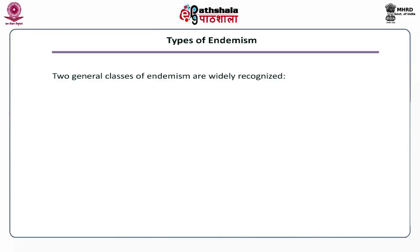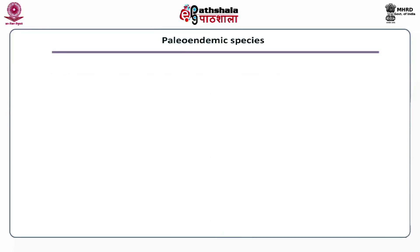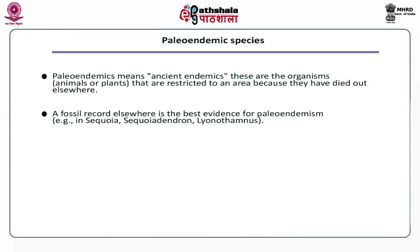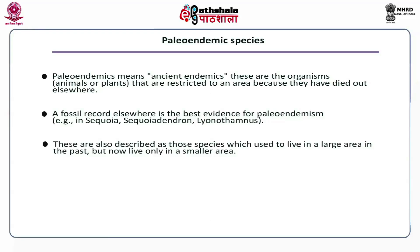Two general classes of endemism are widely recognized: paleoendemism and neoendemism. Paleoendemics means ancient endemics — these are organisms, animals as well as plants, that are restricted to an area because they have died out elsewhere. A fossil record elsewhere is the best evidence for paleoendemism. Examples include Sequoia and Sequoiadendron. They are also described as species which used to live in a large area in the past but now live only in a smaller area.